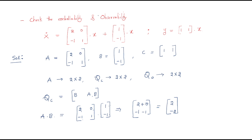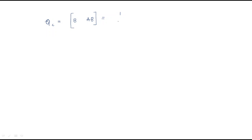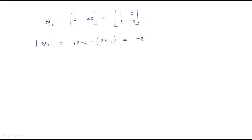The B vector is [1; -1] and the AB vector is [2; -2]. Now we need to check whether it is controllable by finding the determinant. The determinant is 1×(-2) minus 2×(-1), which gives -2 + 2 = 0.